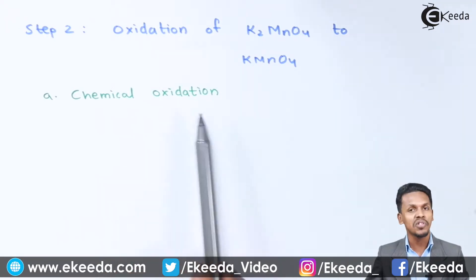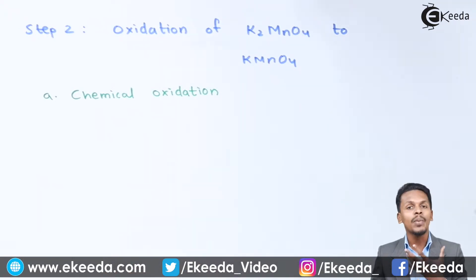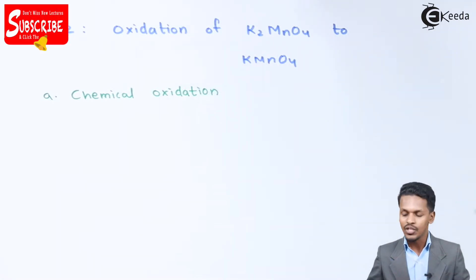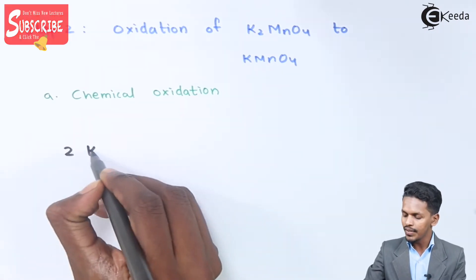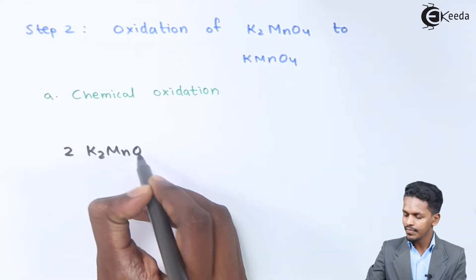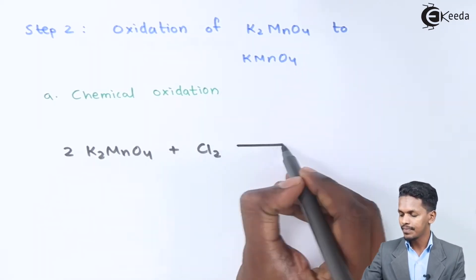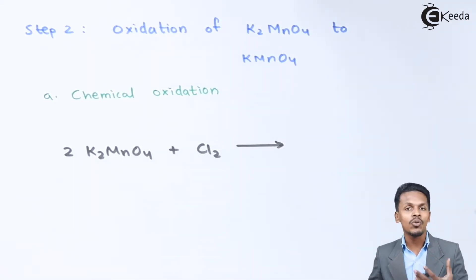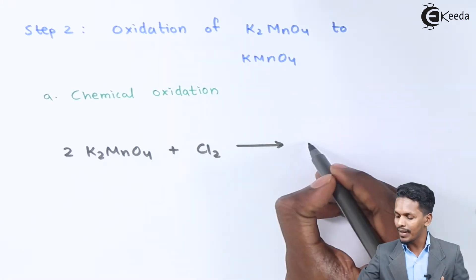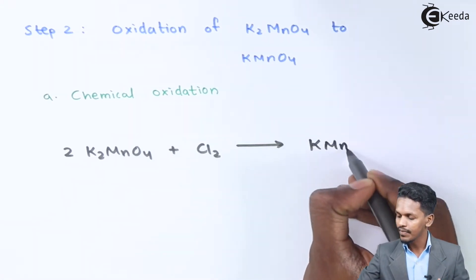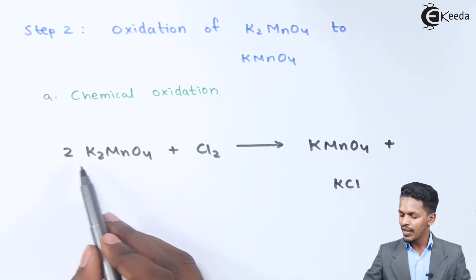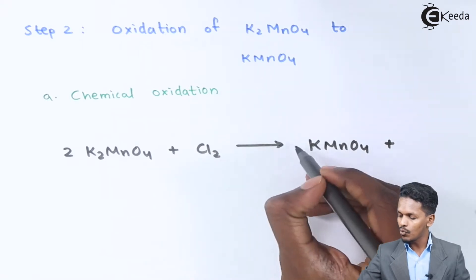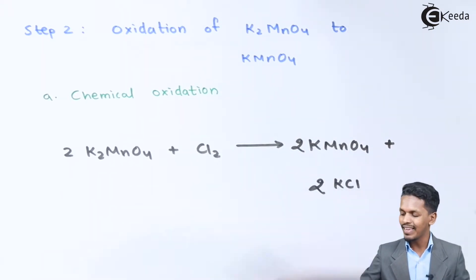The first method is chemical oxidation, where we use a chemical reagent to carry out the oxidation process to obtain KMnO4. For example, if we use two moles of K2MnO4 reacted with chlorine, this kind of reaction is known as a disproportionation reaction, and we obtain KMnO4 along with KCl as a by-product. Balancing the reaction gives us two moles of KMnO4 and two moles of KCl.